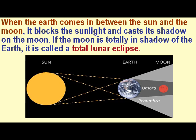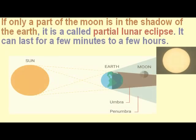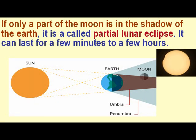If the moon is totally in the shadow of the earth, it is called a total lunar eclipse. If only a part of the moon is in the shadow of the earth, it is called a partial lunar eclipse.